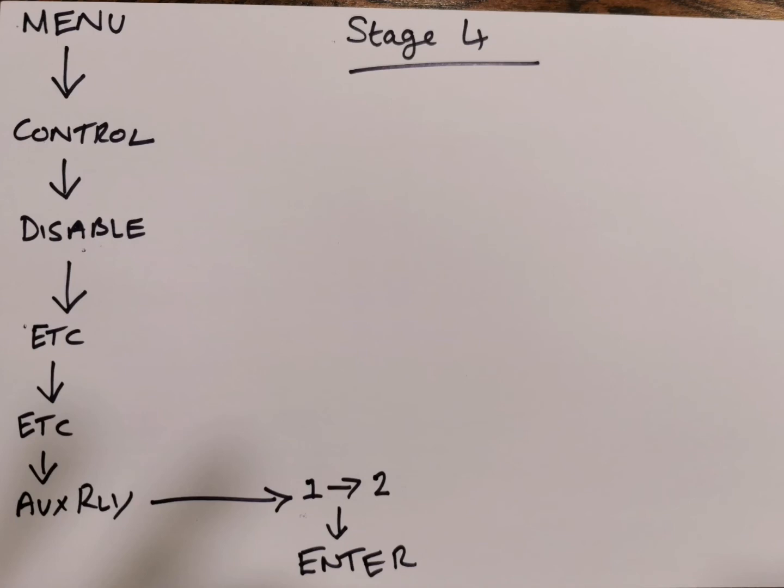We are now at the final stage of a standalone system. One more isolation and you are good to go. We have to now isolate the auxiliary relays inside the fire alarm panel. Start by pressing the menu button again, that's right, then press the control button, then hit disable.